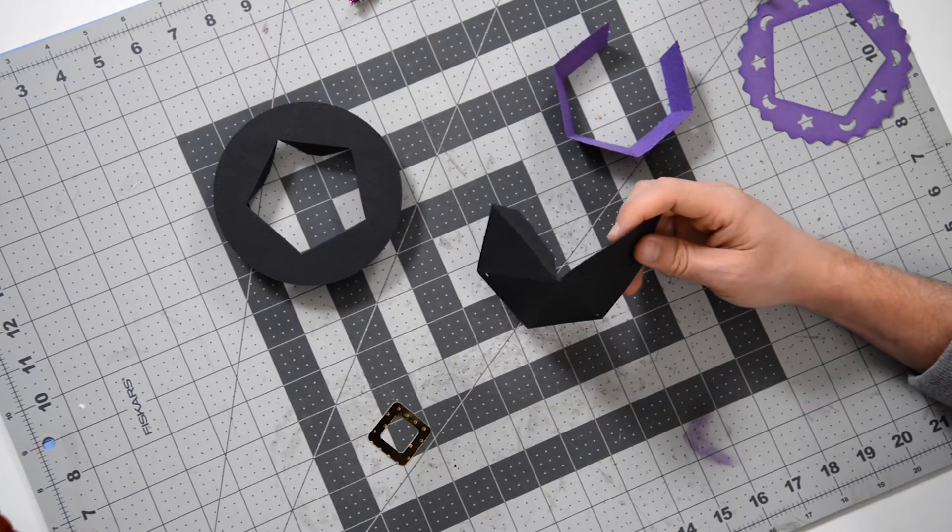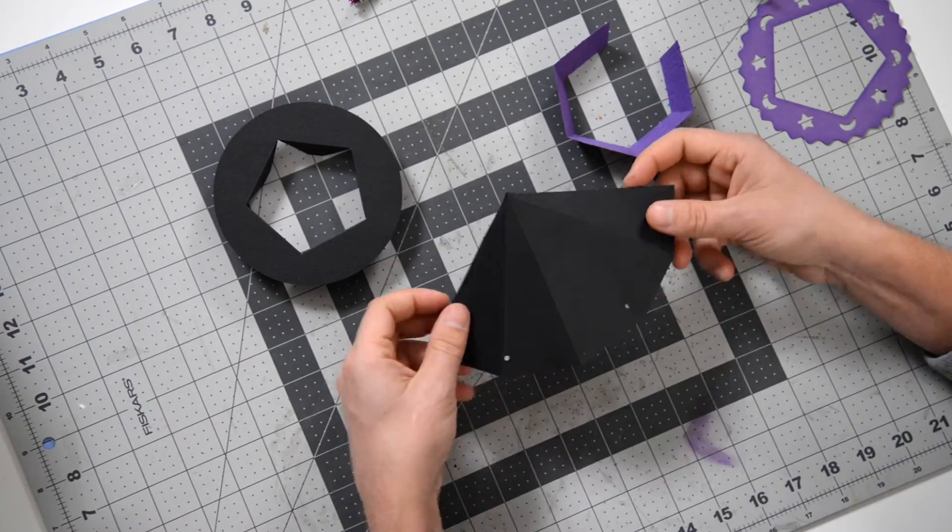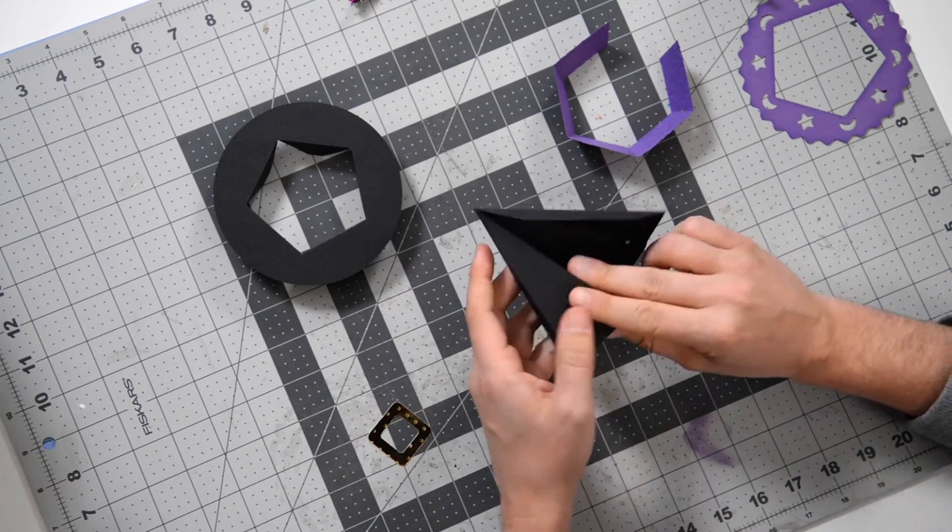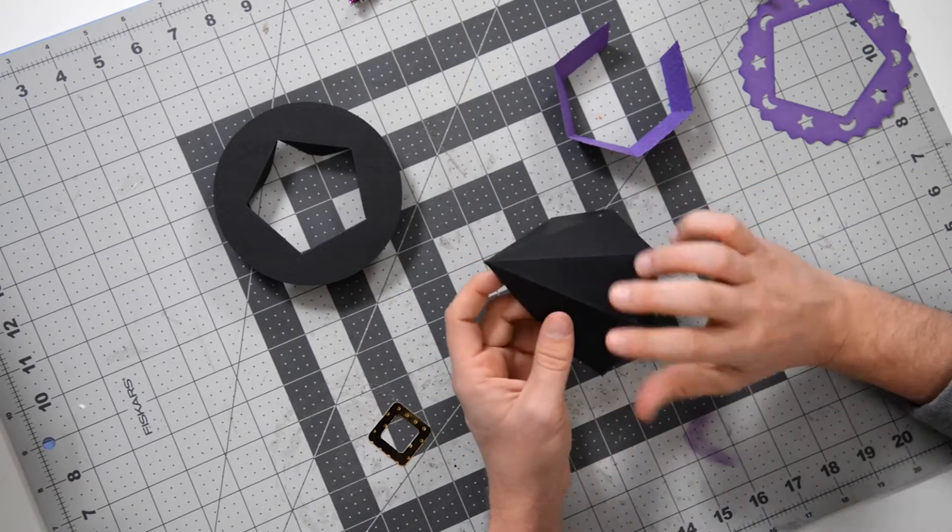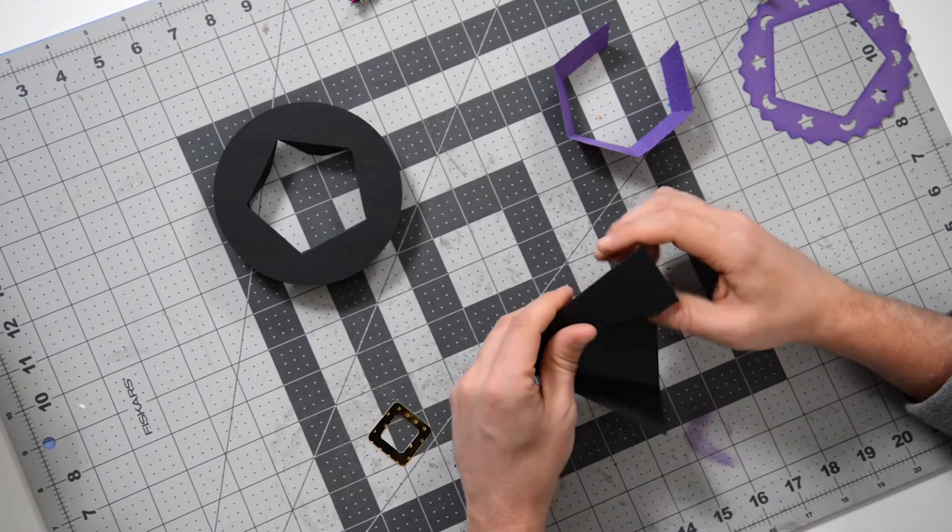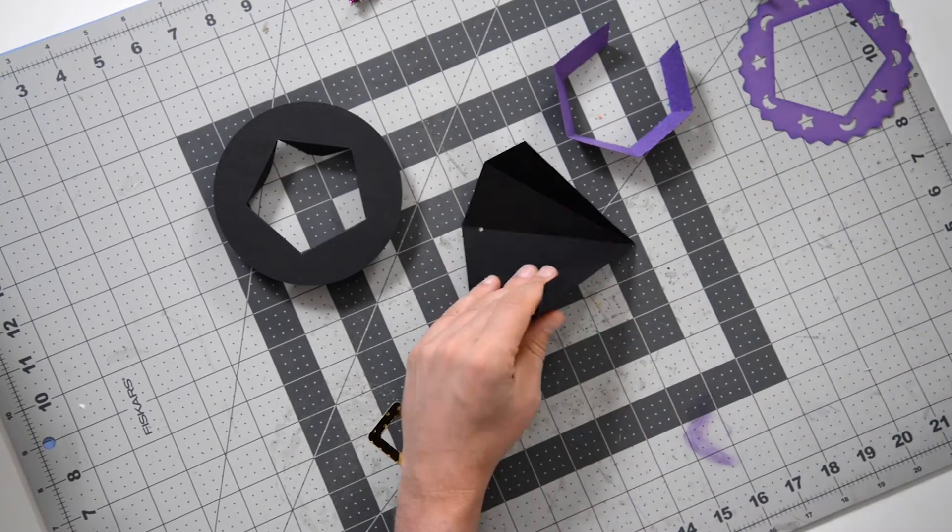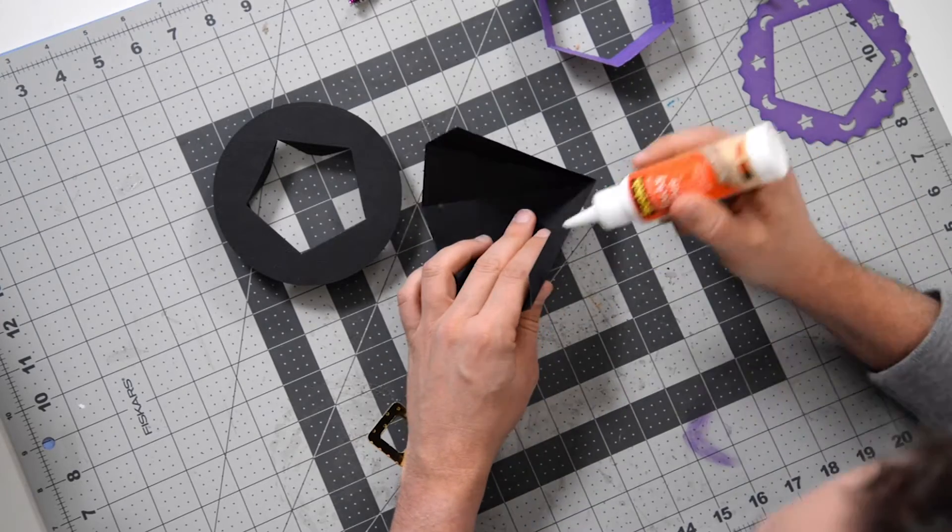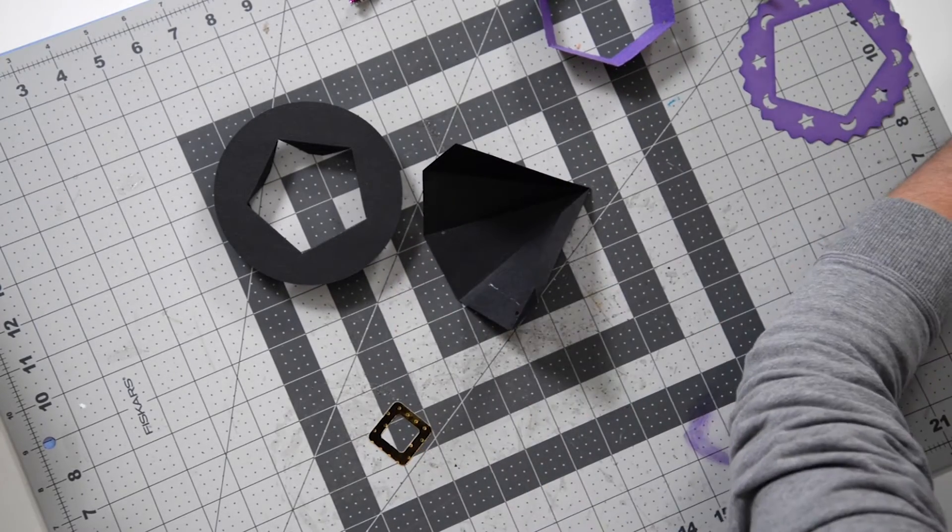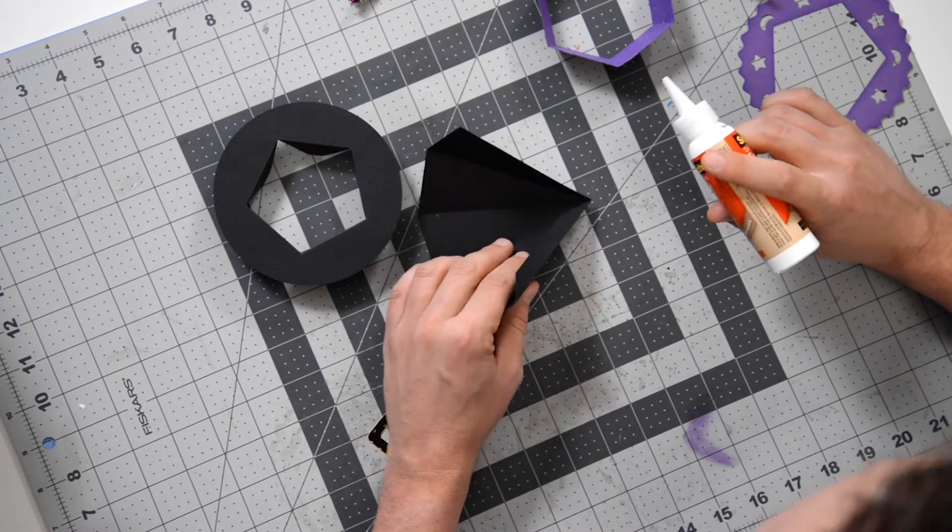So let's take a look at what we have here. Pretty simple. We've got this main piece - I've already gone ahead and folded everything at the score marks. Now for this, I actually used my Cricut Maker, used the score tool. So as of last November, we started including solid score lines with our projects. You'll find those in the extras folder.